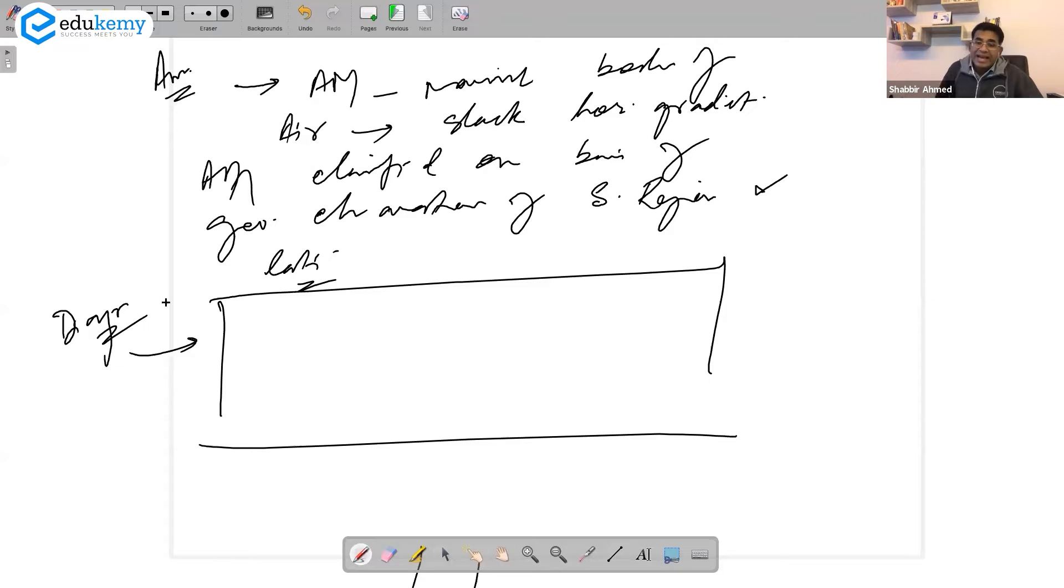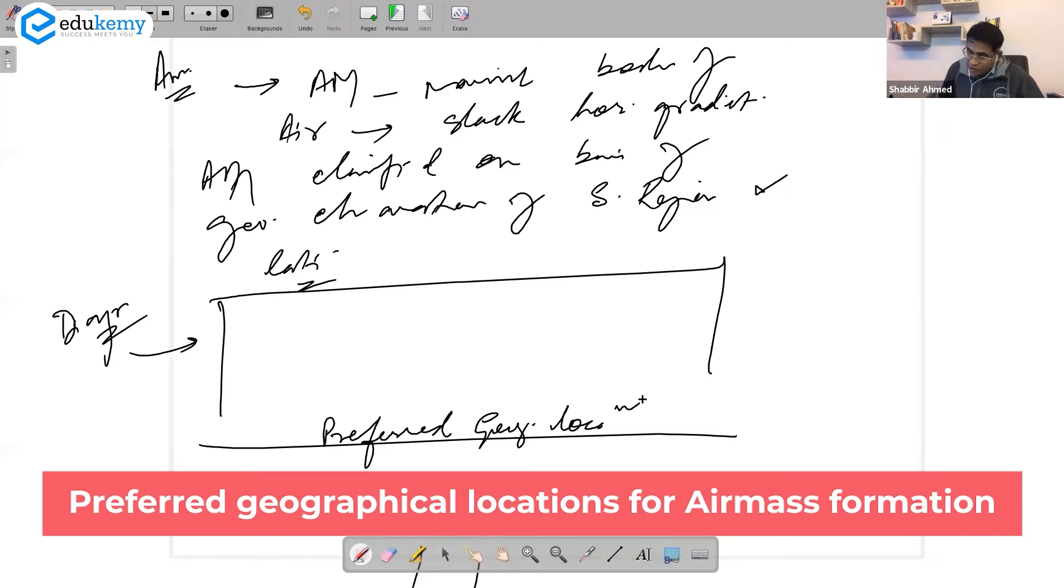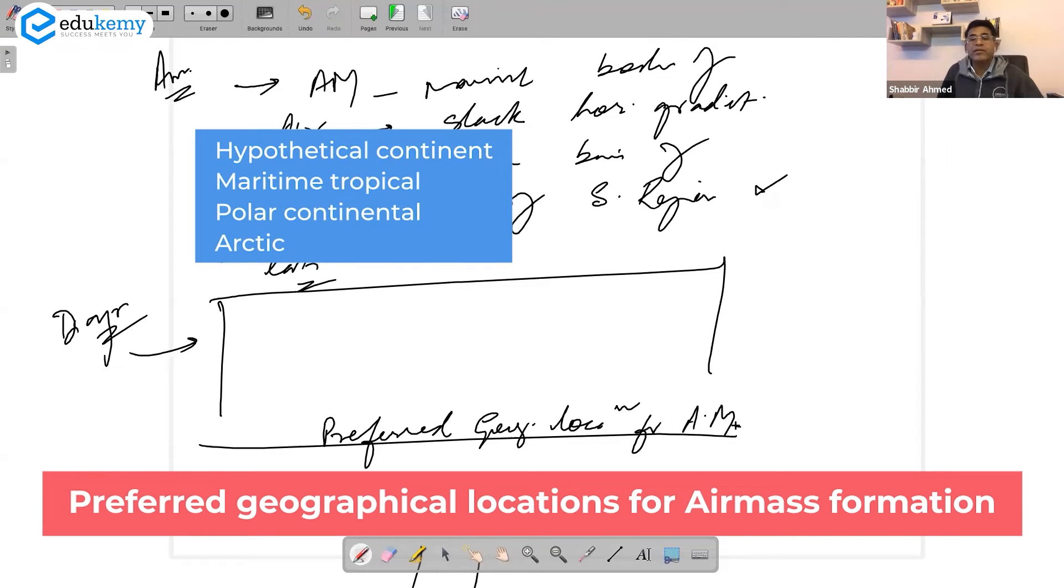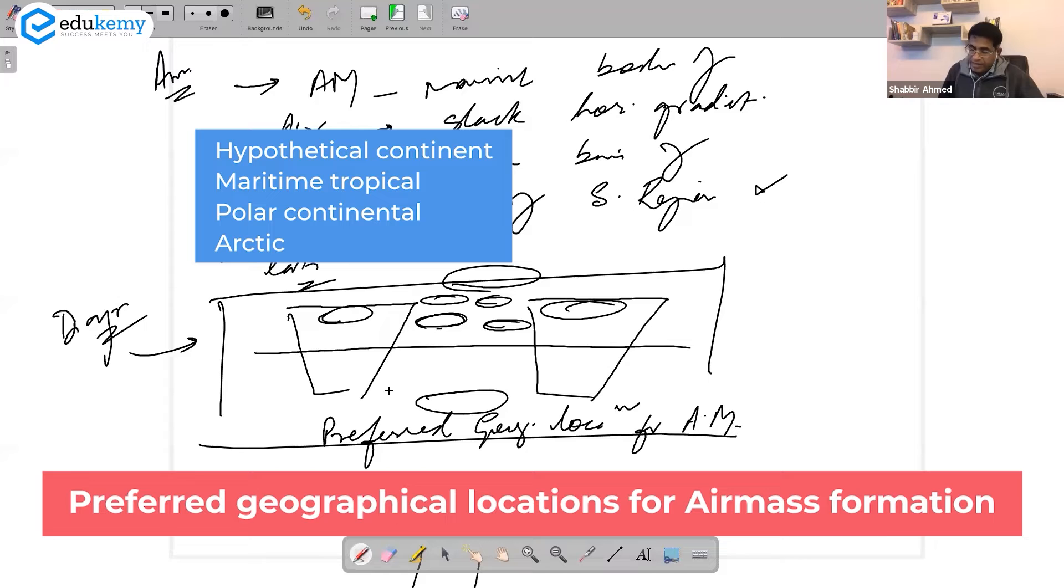You could have a box in the diagram. What do you want to show? The diagram can have the preferred geographical locations for air mass formation. You can do this on a hypothetical continent - maritime tropical, maritime polar, continental polar, arctic, antarctic. At least write down MT, MP, continental polar, arctic, continental antarctic, continental polar.